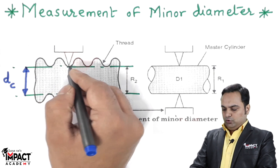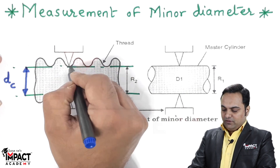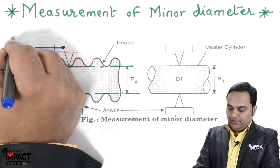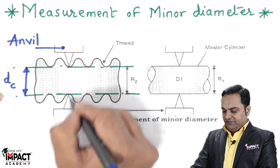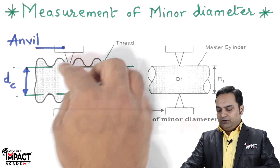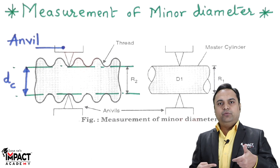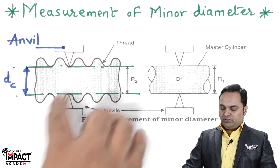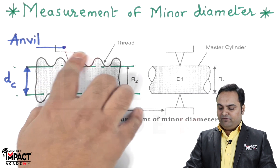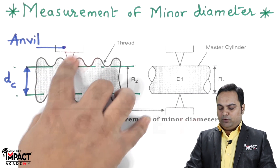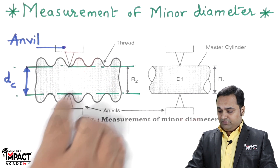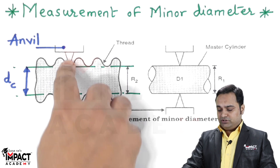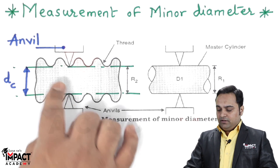To measure the core diameter, we need to take an anvil of a special shape. As we can see here, this is the micrometer anvil having pointed ends. Pointed ends of the anvil are to be used when measuring the core diameter, because when measuring the outer diameter the anvil would be flat and cylindrical — the pointed edges won't be there. So for the core diameter we use the anvil with pointed edges.